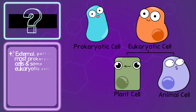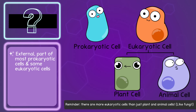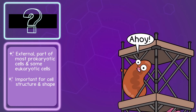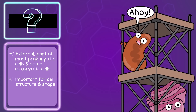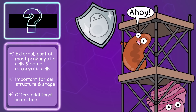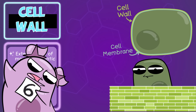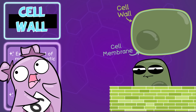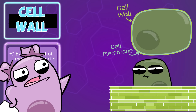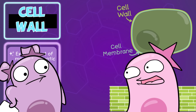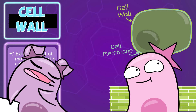Okay, so this external structure is part of most prokaryotic cells, and some eukaryotic cells, like plant cells. Really important for structure — it helps the cell maintain shape and offer additional protection. It's the cell wall. I give it a 6 out of 10. I'm not really into walls, like more of an open floor plan. Plus, not all cells have one, and that feels unfair. You're just mad because you don't have one. I said what I said.